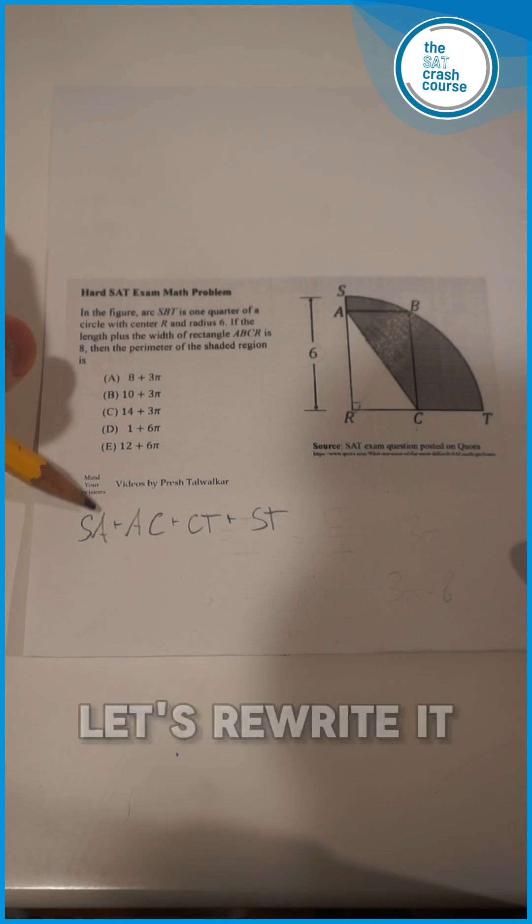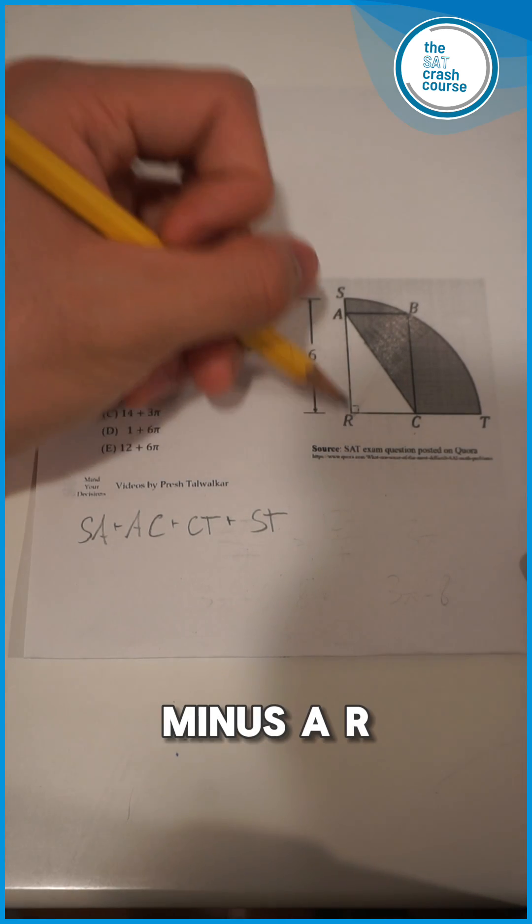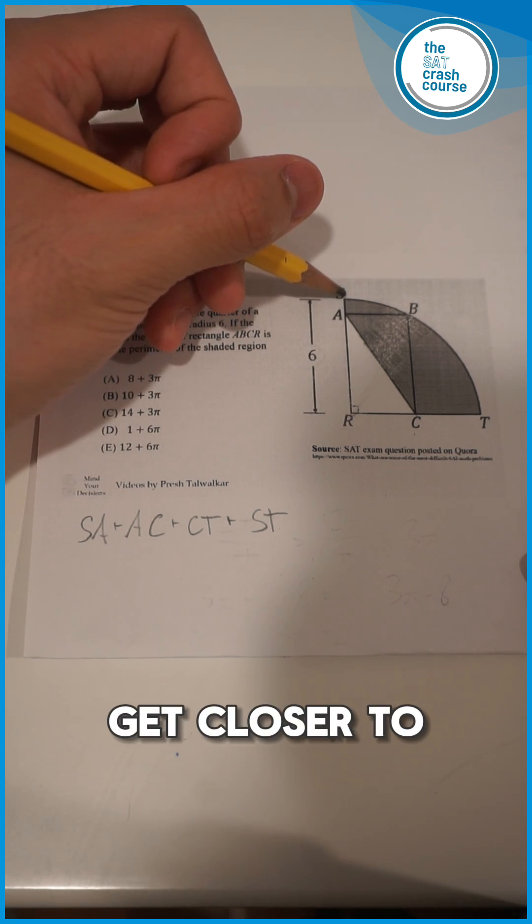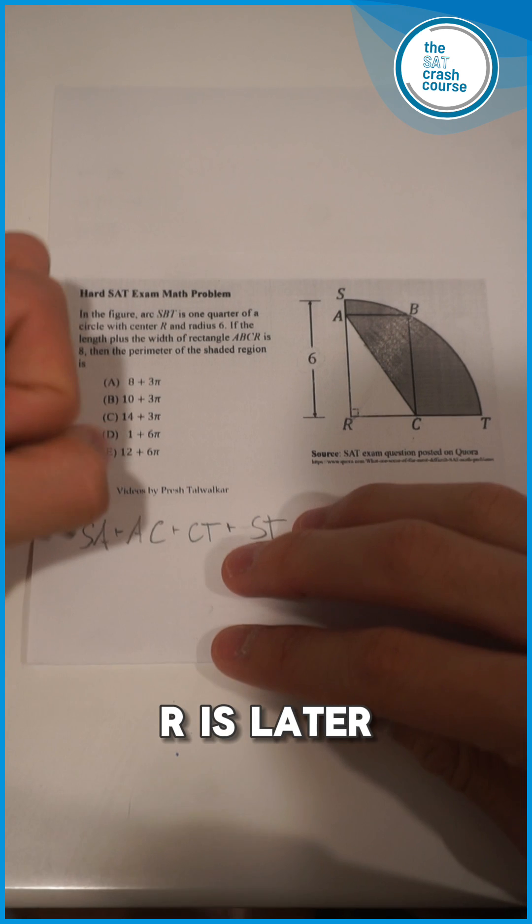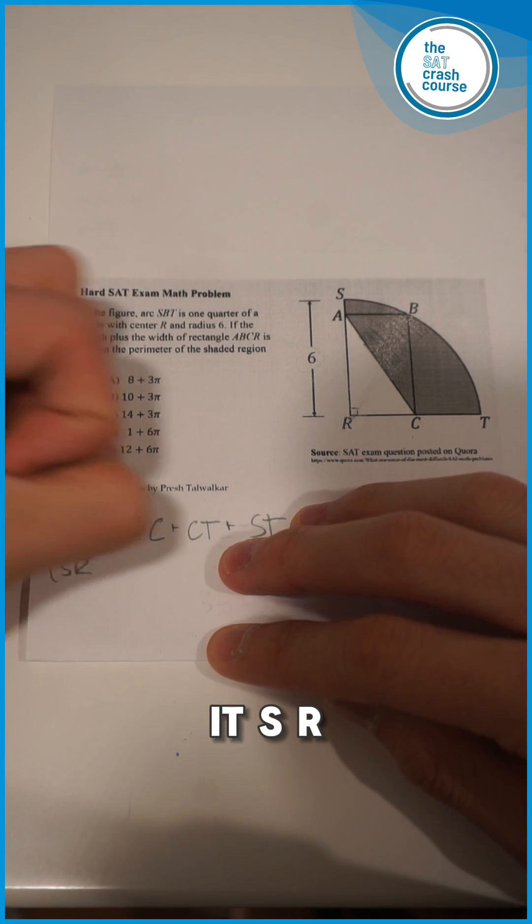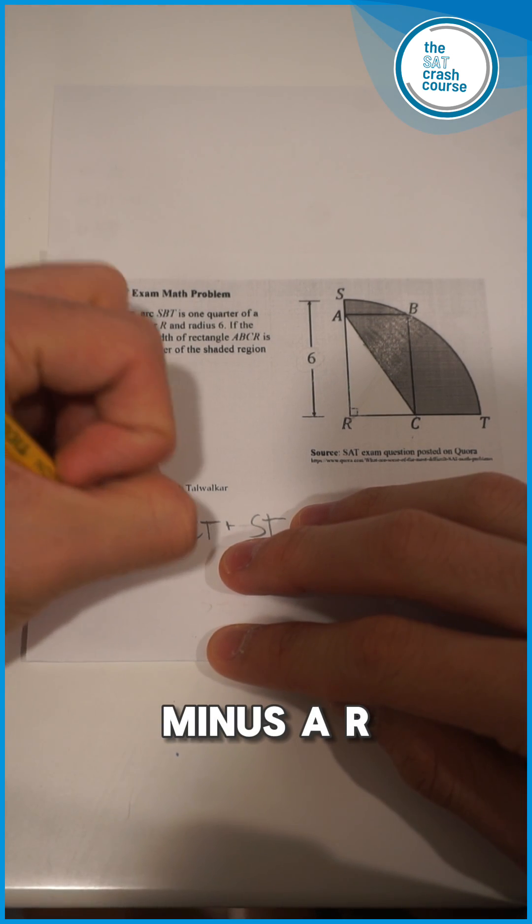Now we just have to solve what each of these is, and then we can get the perimeter. For SA, let's rewrite it into SR minus AR. This helps us get closer to known lengths, because we know that SR is 6 and we can deduce what AR is later.